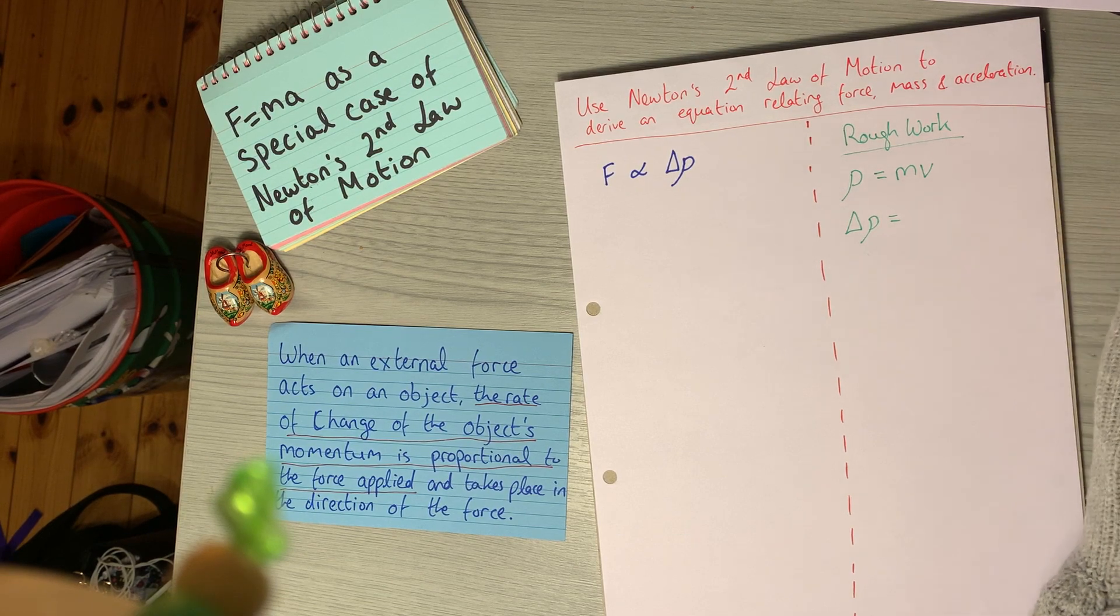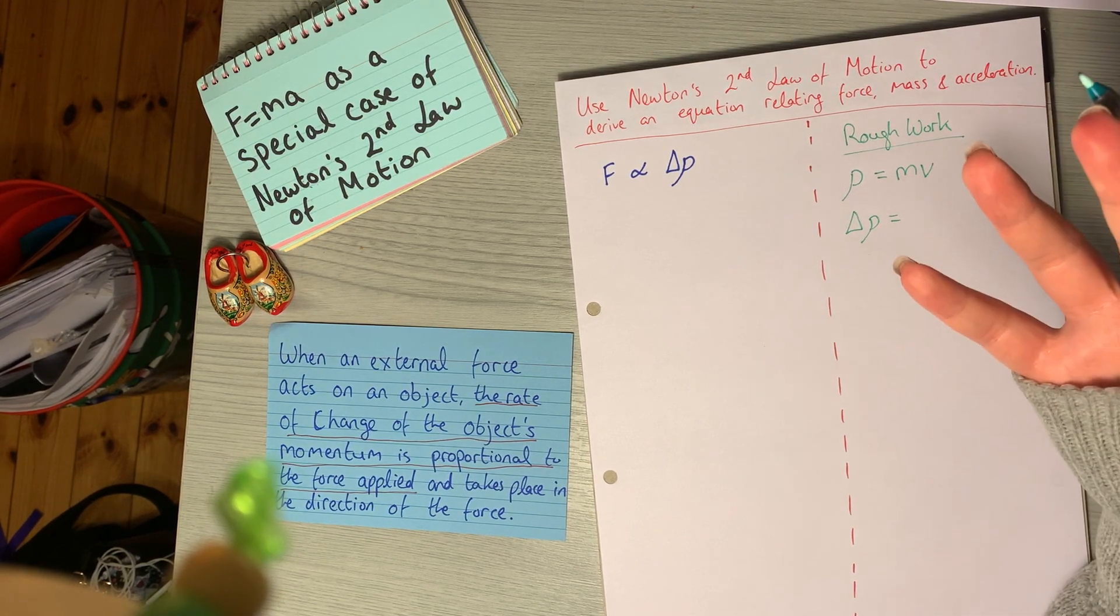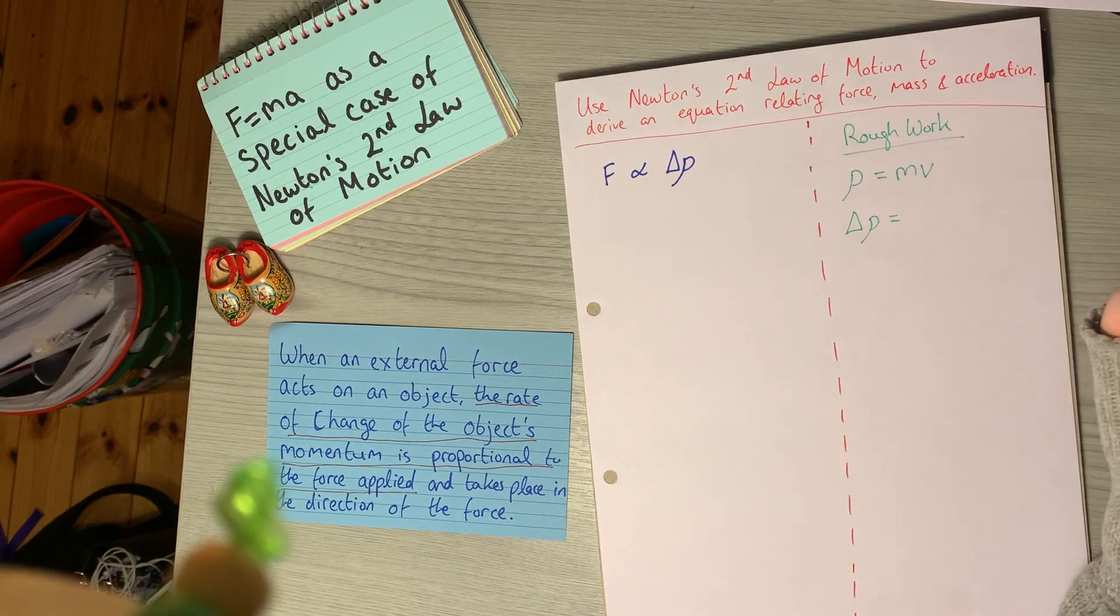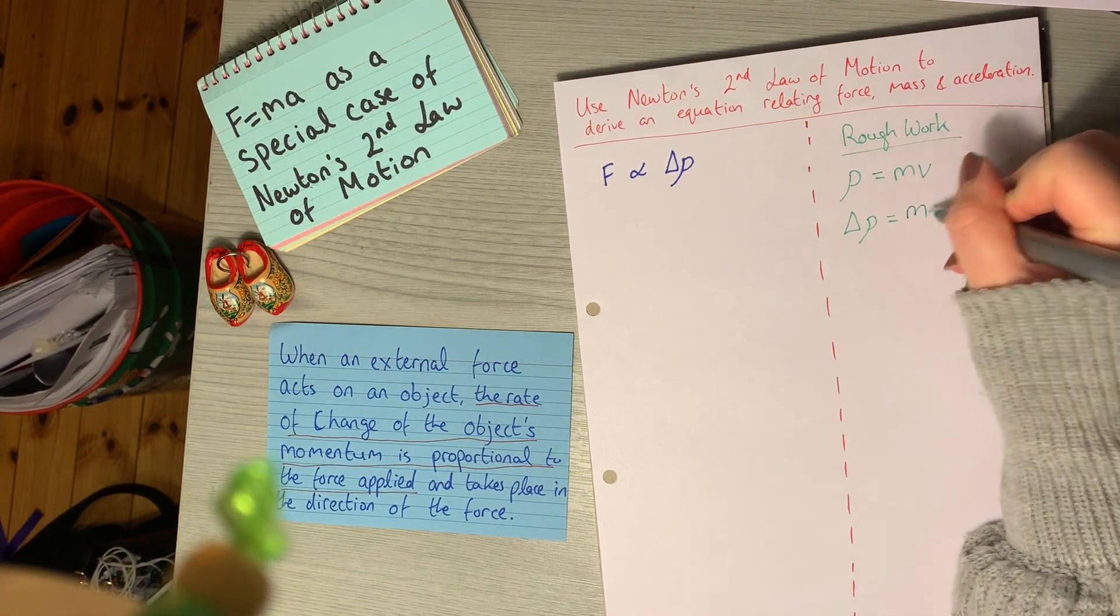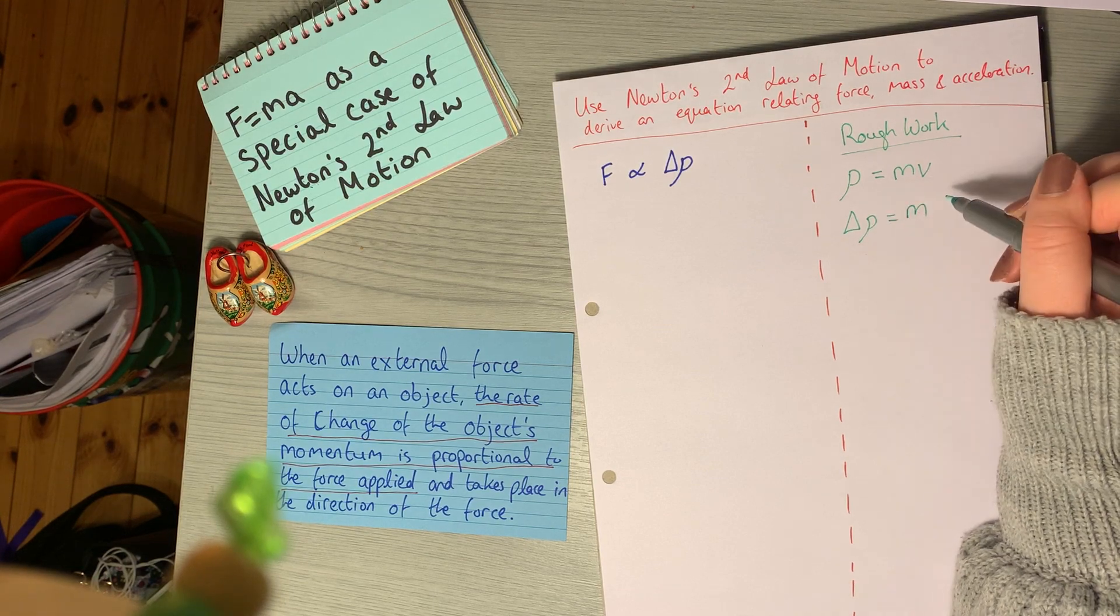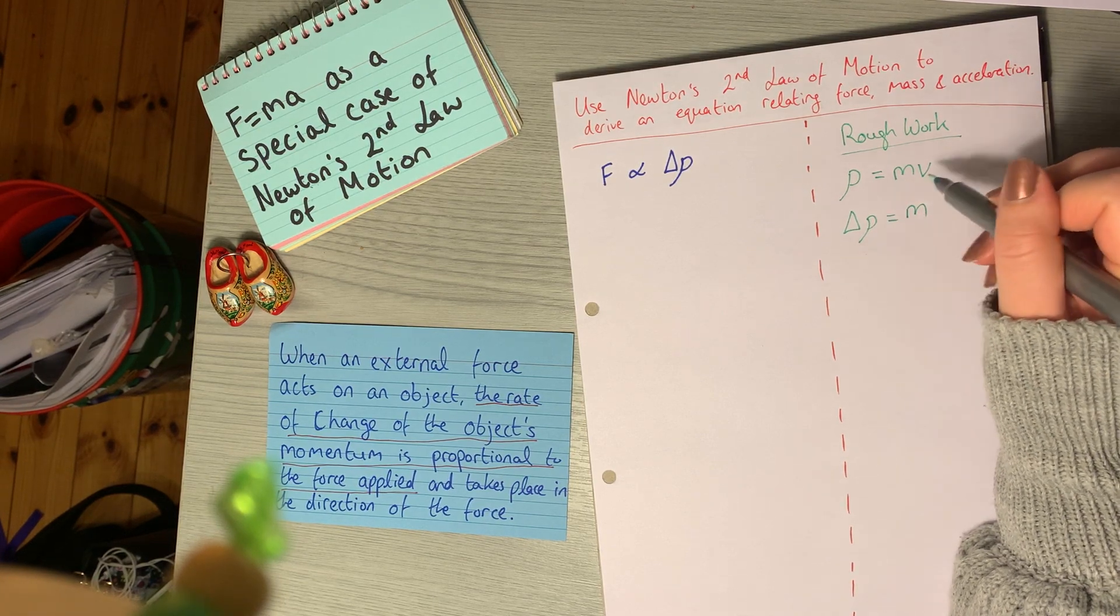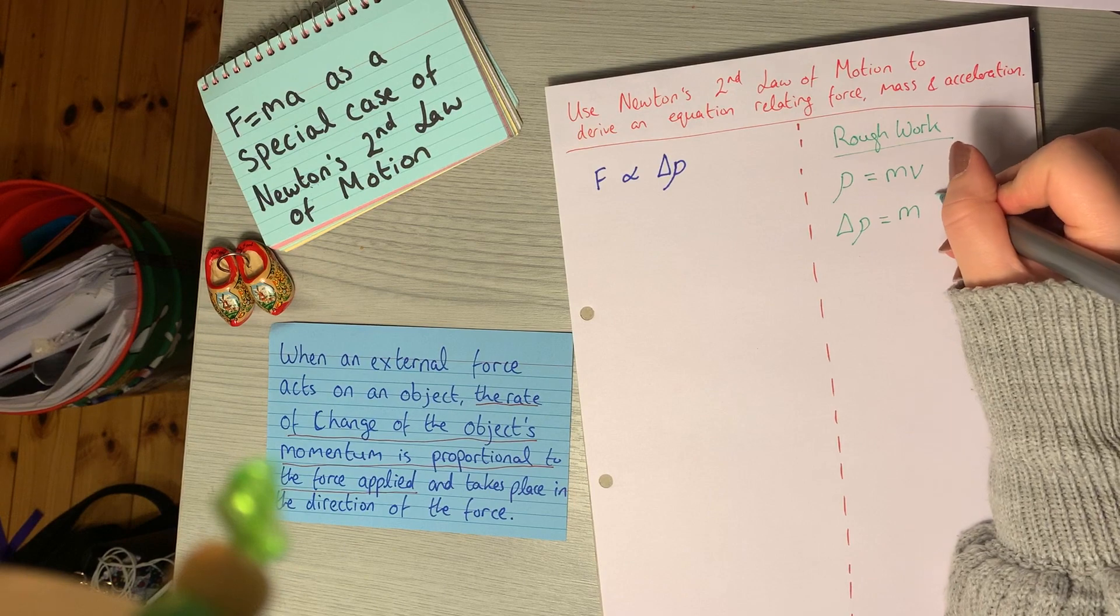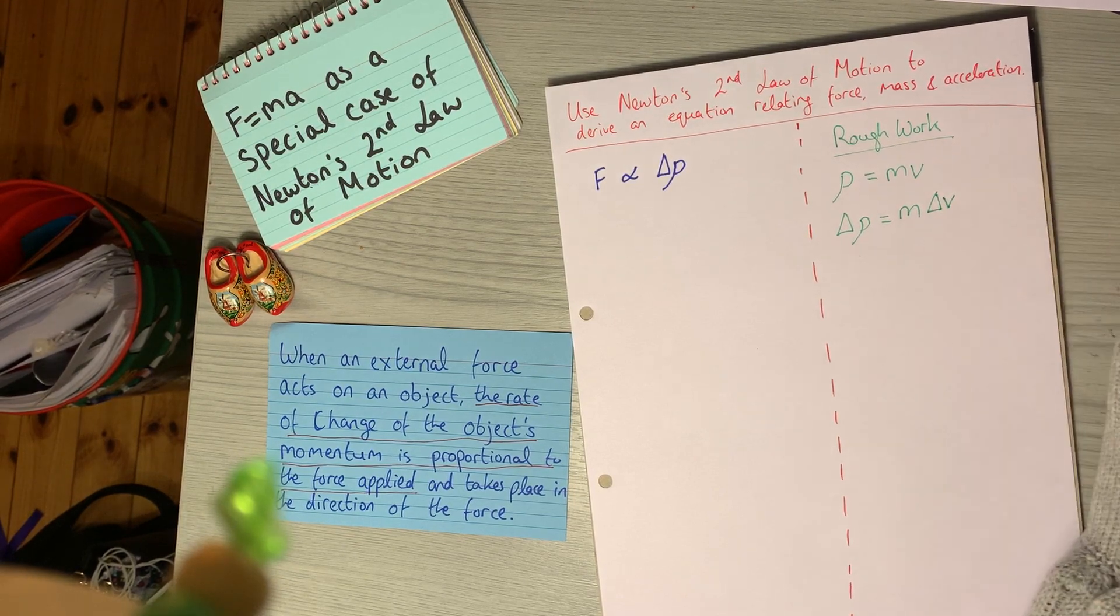It can't be the mass. The mass is constant. If you have an object, its mass isn't going to change. So M stays the same. That means that the rate of change in momentum has to be dependent on the velocity. So as your velocity changes, your momentum will change.